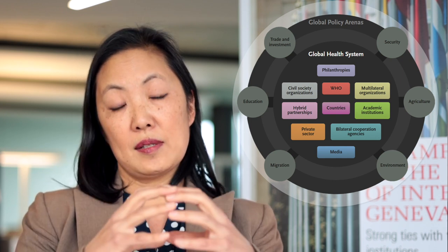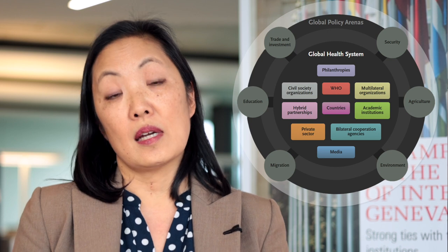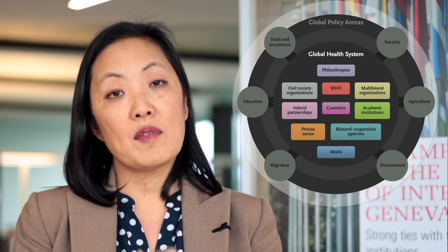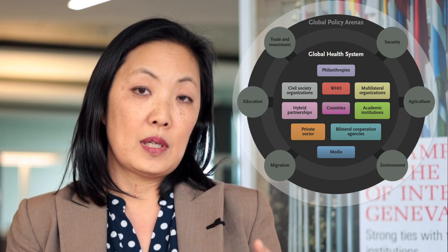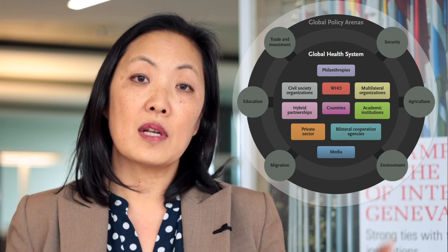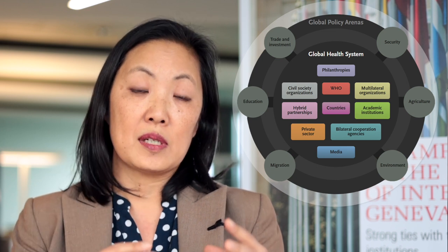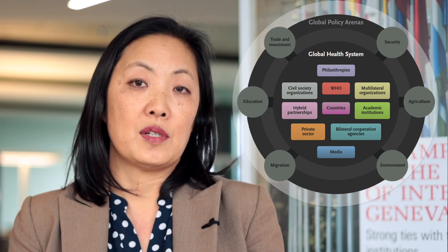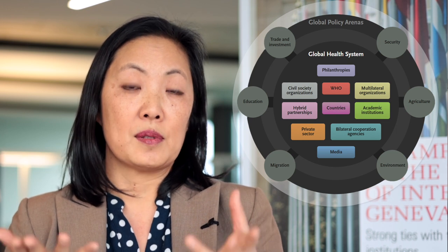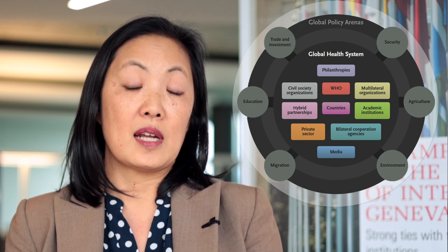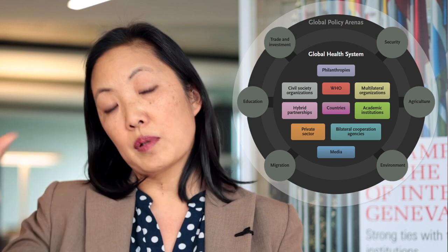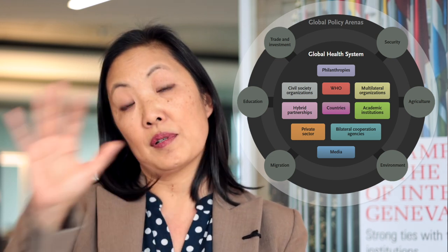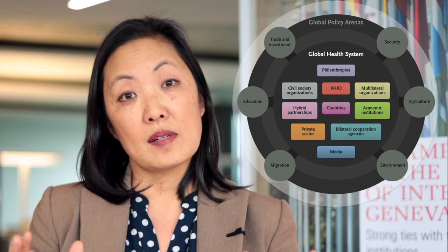What you can see in the center circle of this image is that countries or governments are really at the center, as is the World Health Organization, where 194 government member states come together to try to manage health issues that extend beyond the national level. But there is also a whole host of other actors that populate the global health system.